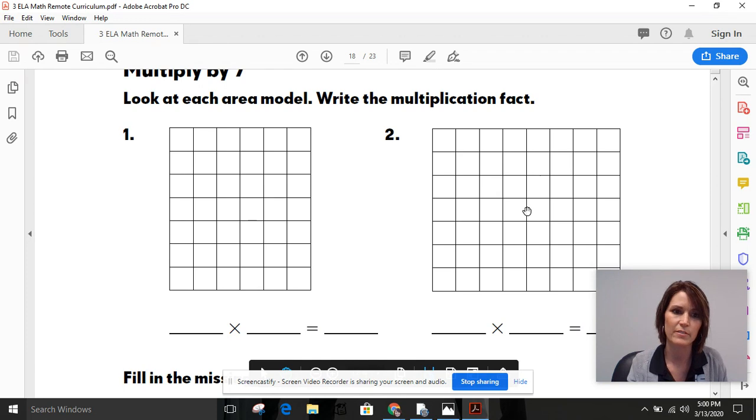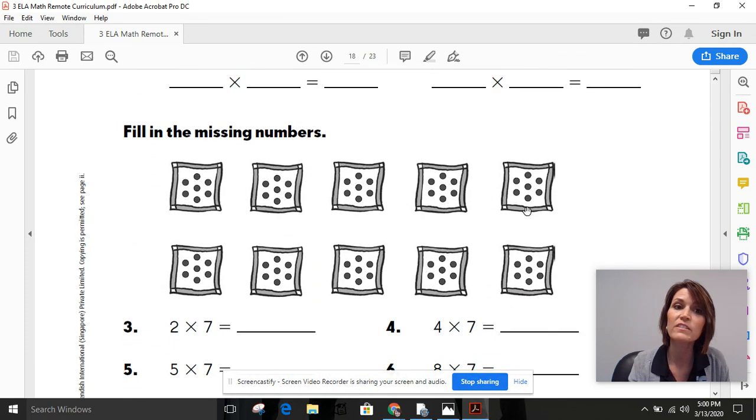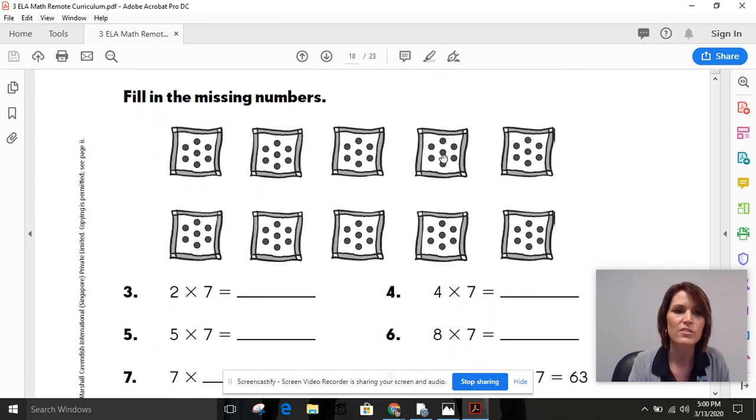Let's see what the rest of the page looks like. Down here, we've got fill in the missing numbers. So I'm guessing, let's count to make sure. One, two, three, four, five, six, seven. One in the middle. Do these all look the same? Groups of seven.